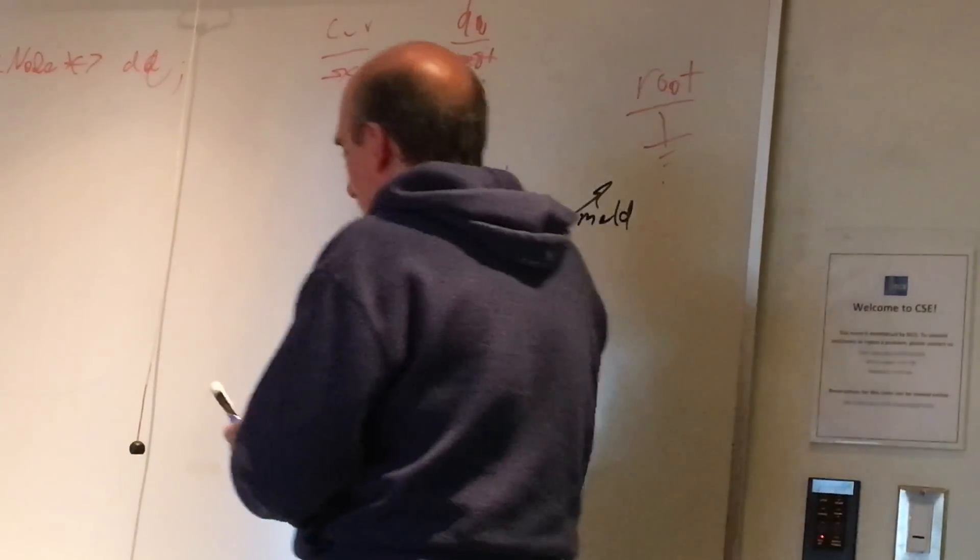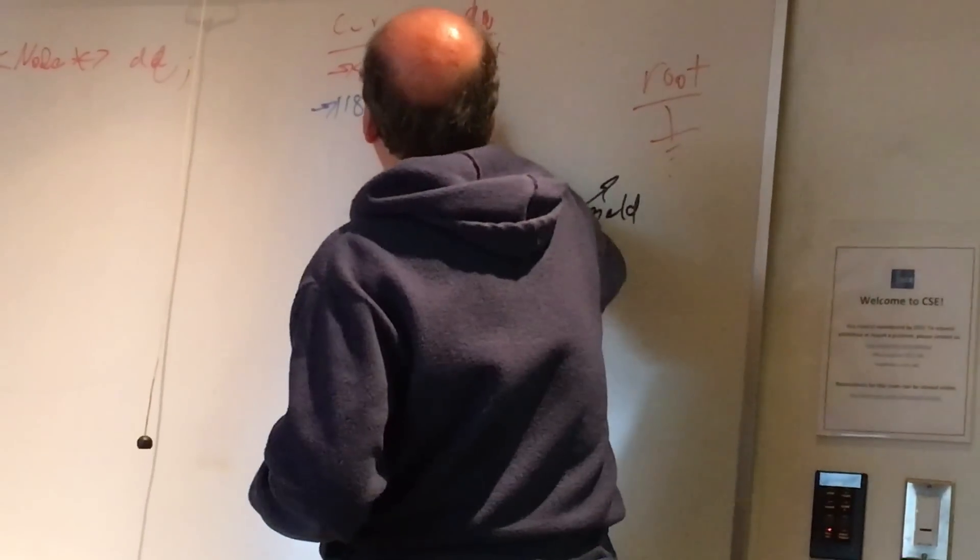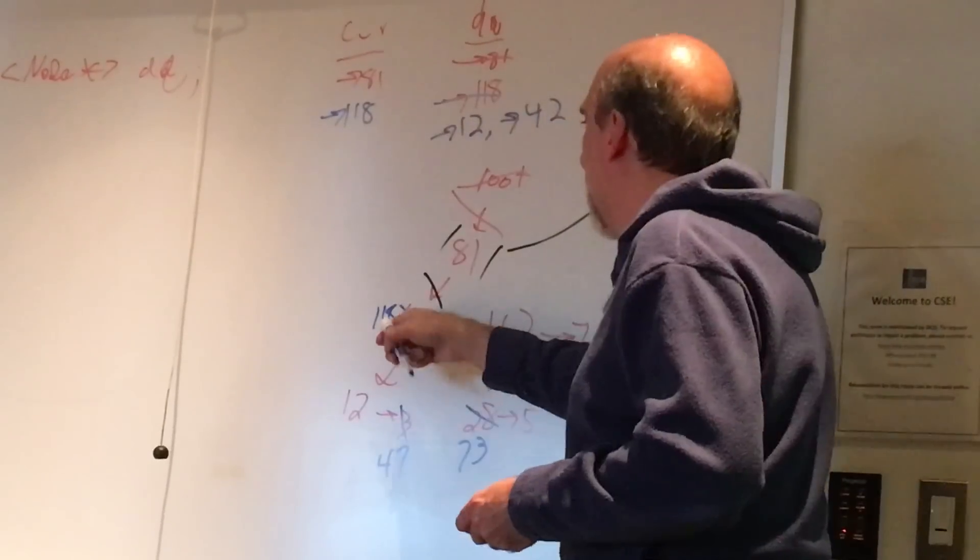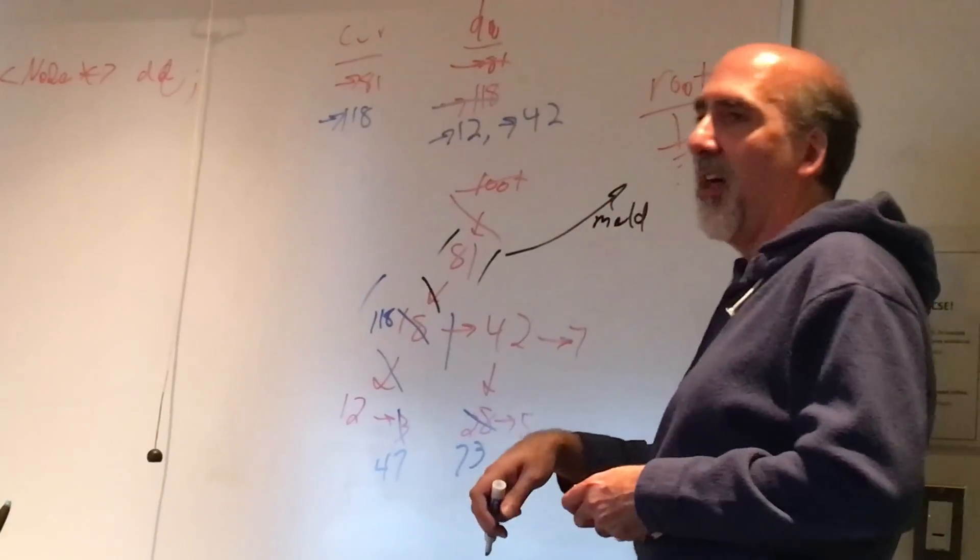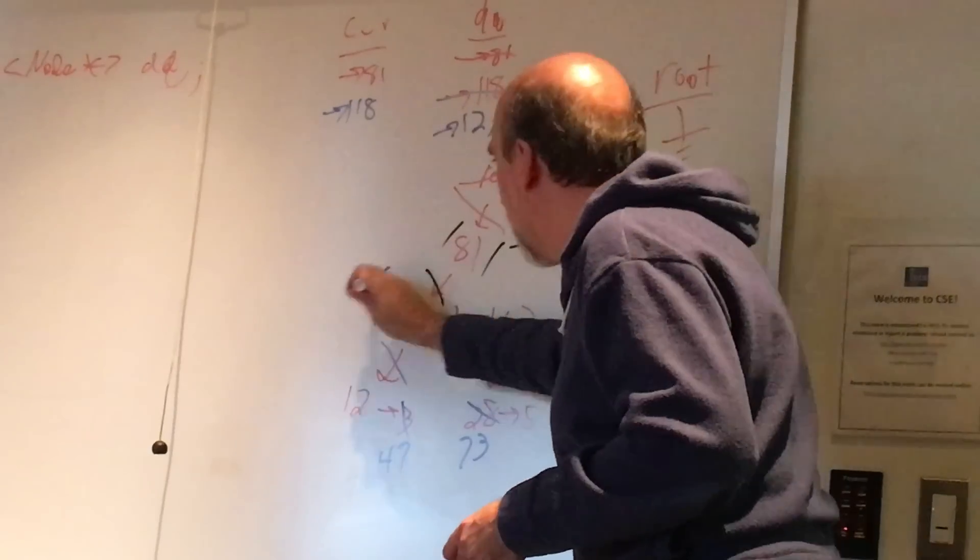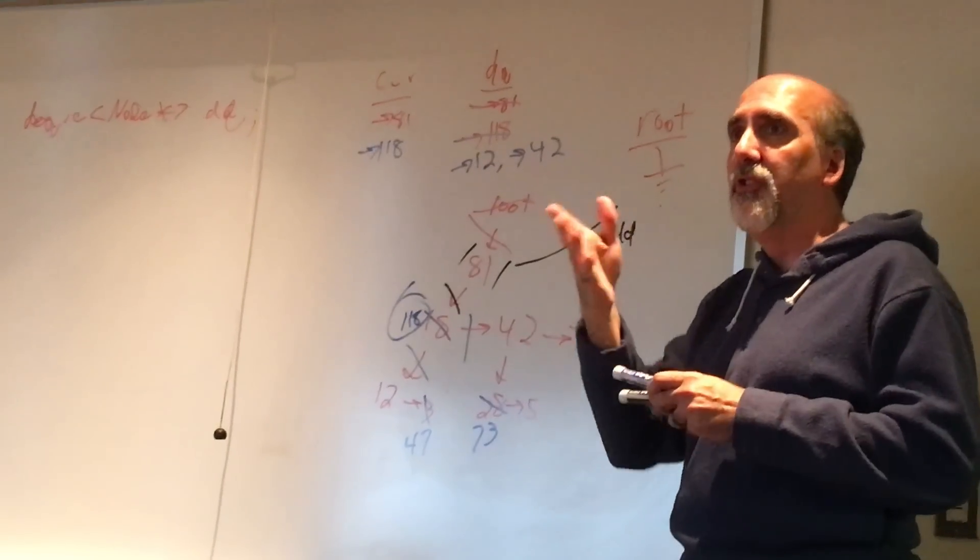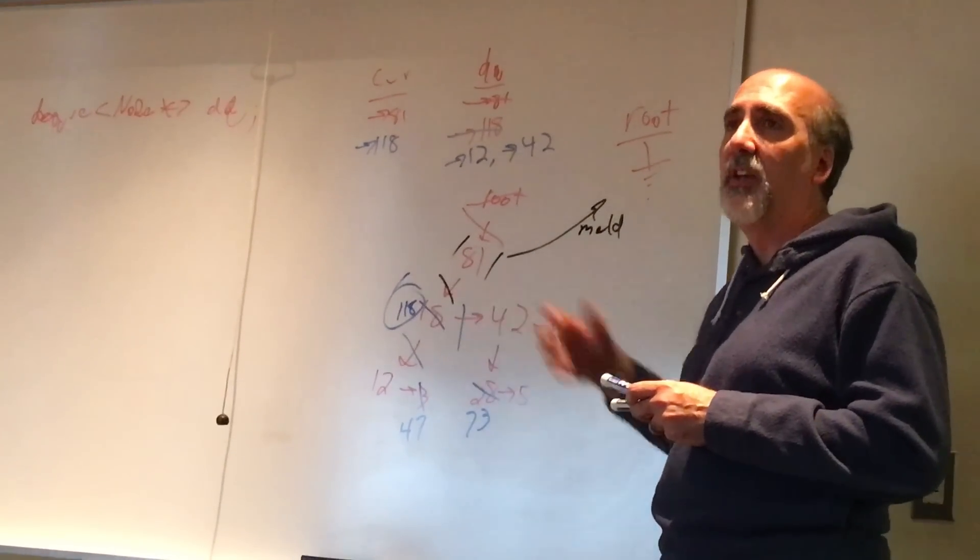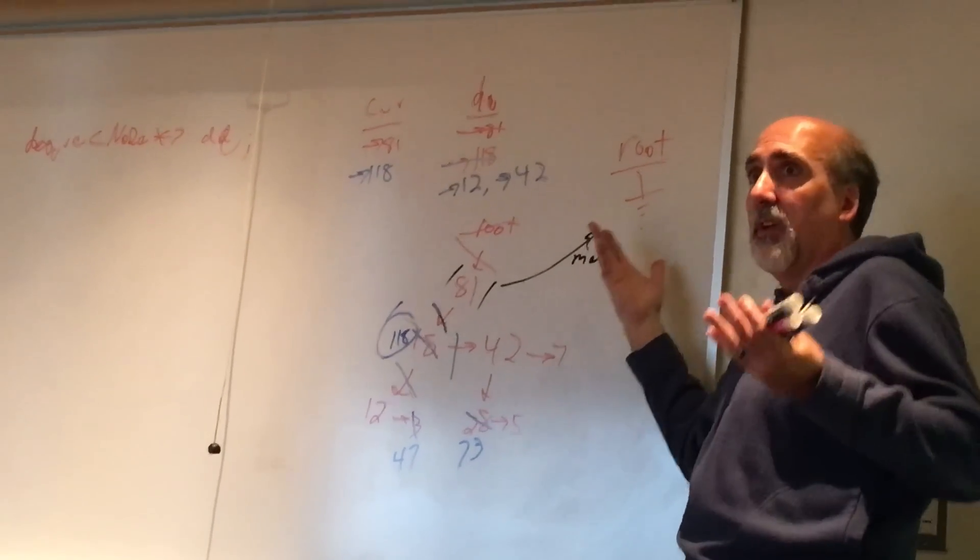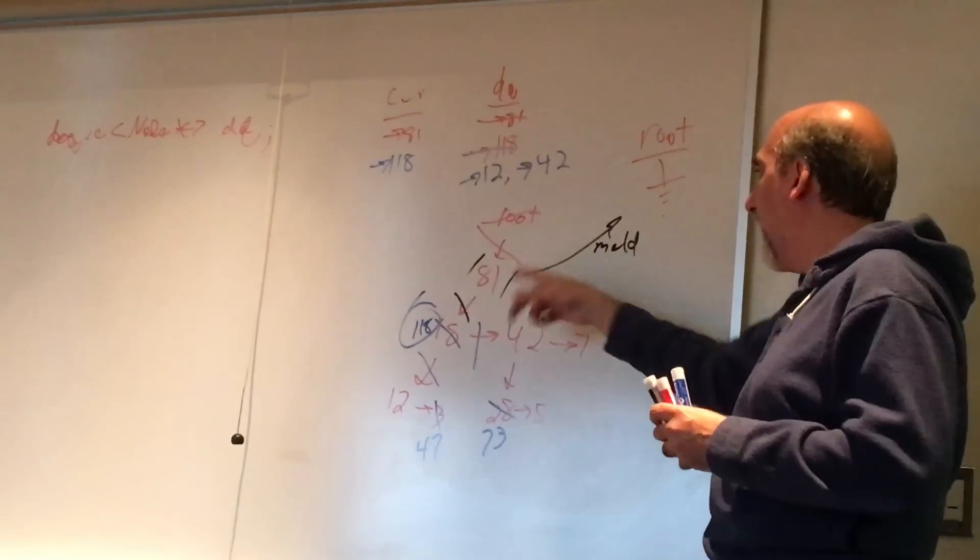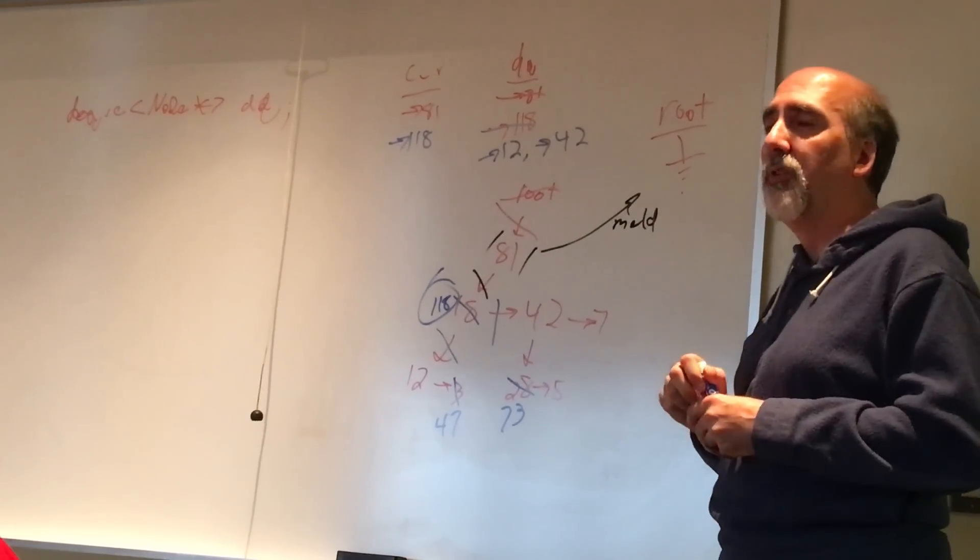I take this pointer to 81. Right now I've got current, current is a pointer to 81. Then I take that 81 out of the deck, I add the pointer to 118, I add my child and sibling. Then I take this 81 and break it. I've got no child, no sibling, no parent or previous. This is just a node. And then we meld it. We meld it with the root. Do that for everybody. Take this 118. When 118 comes out, I add to the deck pointer to 12 and pointer to 42. Then I take this 118 and I detach it. 118's got nothing, no siblings, no children, no nothing. And I take this 118 and I meld it with the root.